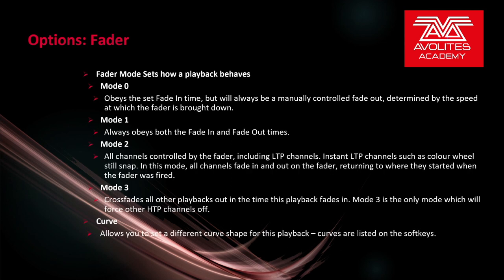Under the Fader tab, Fader Mode sets how the playback behaves. Mode 0 obeys the fade in time but will always have a manually controlled fade out, determined by the speed at which the fader is brought down. Mode 1 obeys both the fade in and fade out times. Mode 2 has all channels controlled by the fader including LTP channels, though instant LTP channels such as color wheel still snap - all channels fade in and out on the fader and return to where they started when the fader is brought down. Mode 3 crossfades all other playbacks out in the time this playback fades in, and is the only mode which will force other HTP channels off.